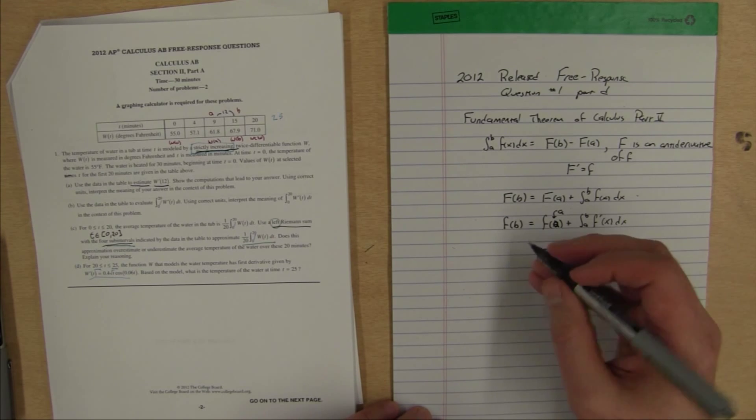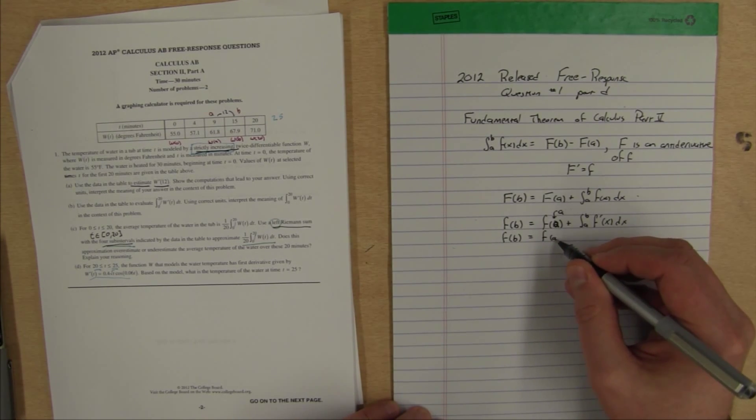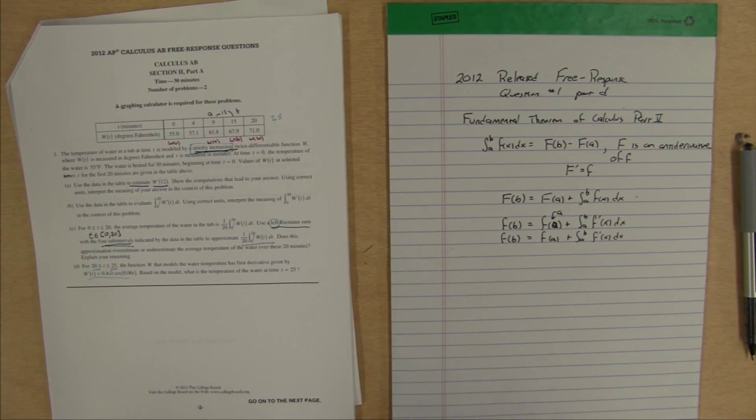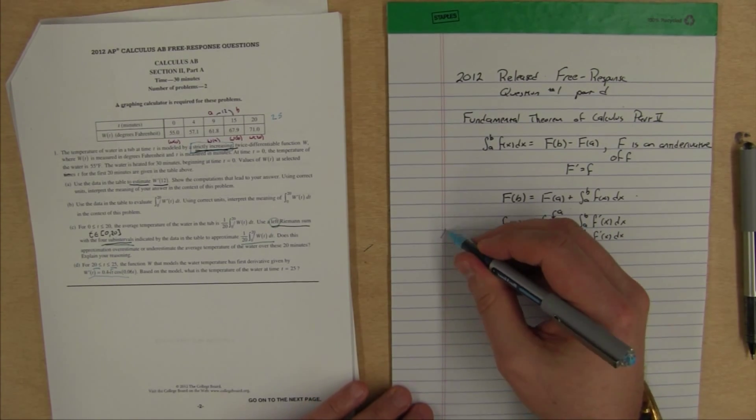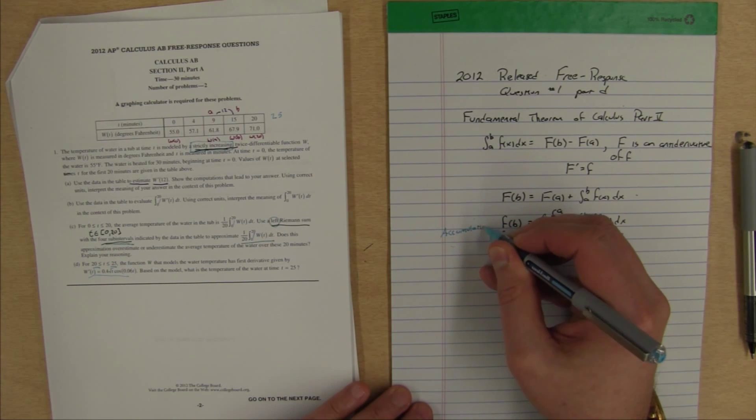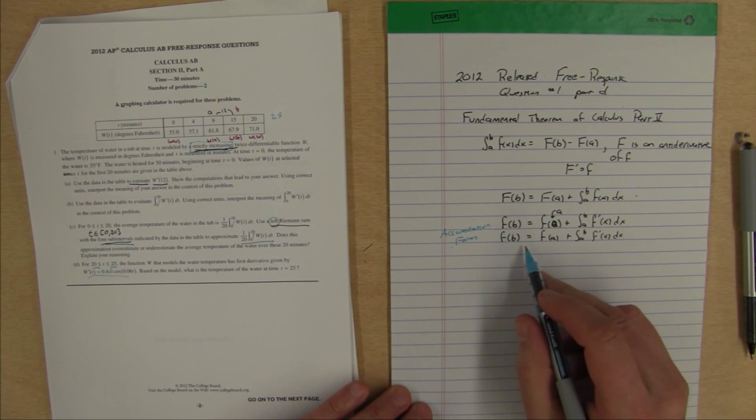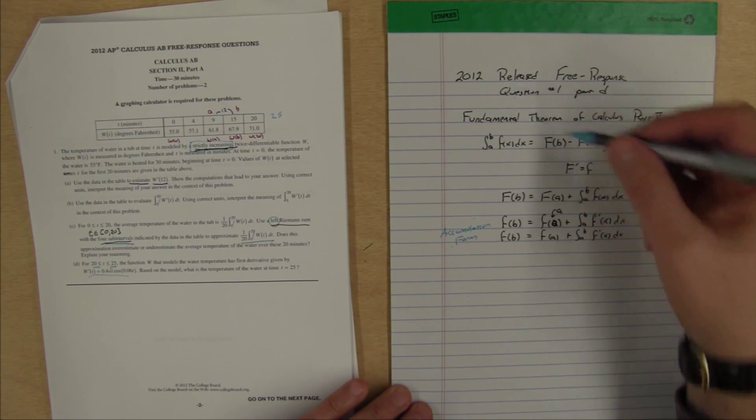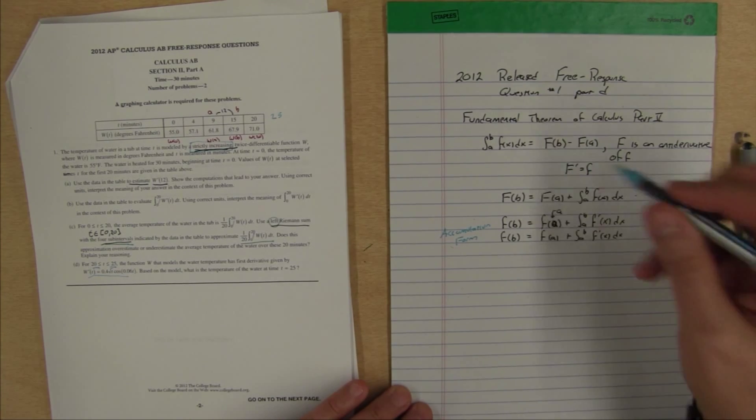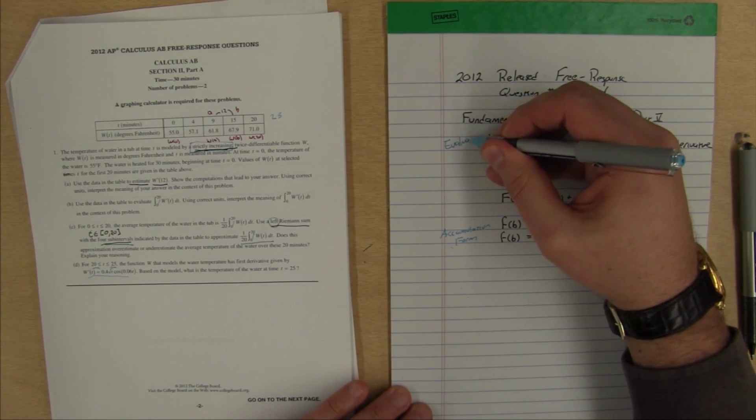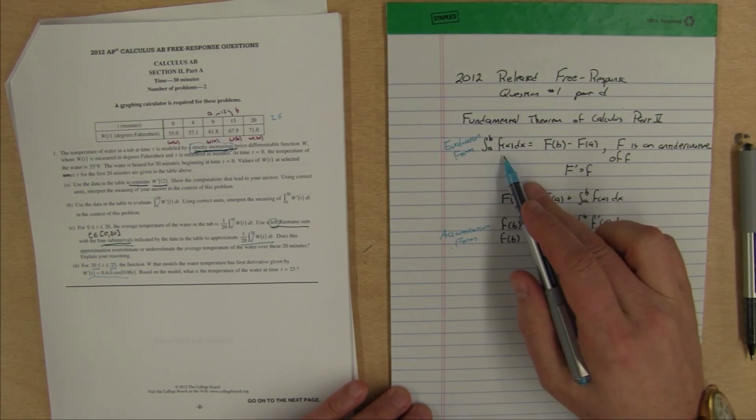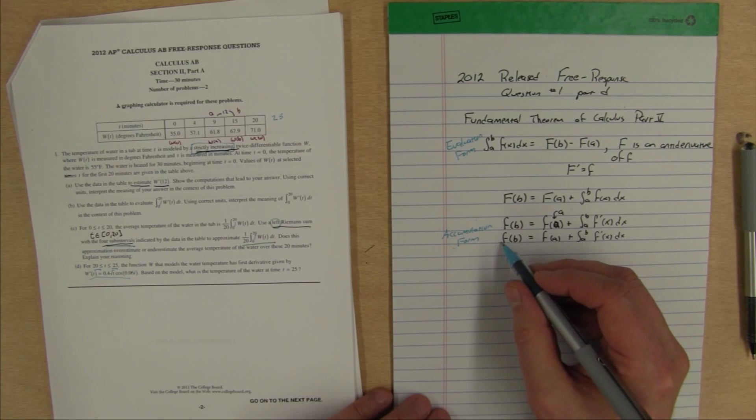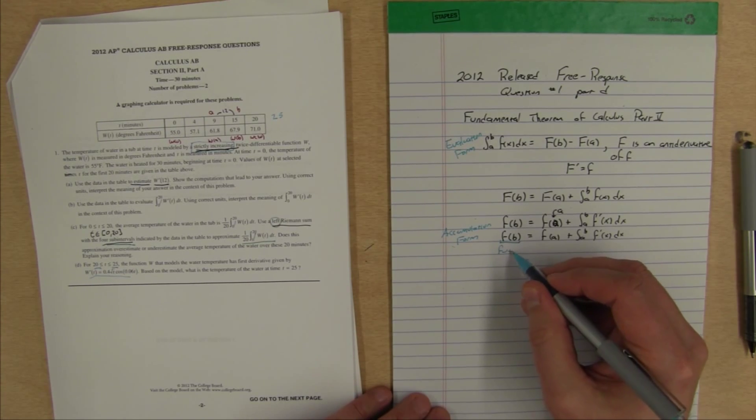When you write the fundamental theorem of calculus this way, f of b equals f of a plus the integral from a to b of f prime of x dx, this form of the fundamental theorem has a special name, it's often called the accumulation form. It's talking about how this function gets from a point a to a point b by accumulating value through the integral. This form up here, where we have the two capital F and we're subtracting, that's often called the evaluation form. This form allows us to actually evaluate an integral. This form allows us to predict a future value of the function.